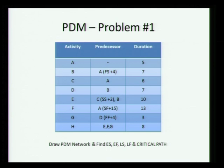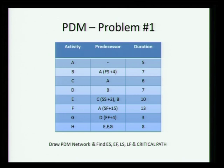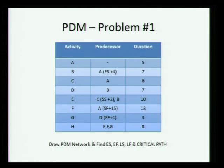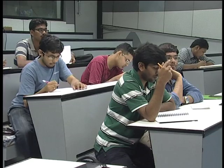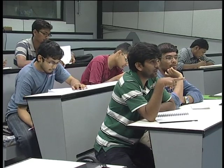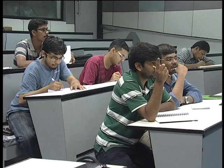A student asks: in the F-A relationship, is there a start-to-finish? Yes, start-to-finish means A start to F finish. F can finish 15 days after A starts — there is a 15-day lag. So in the A-F relationship, F finishes first; A will finish after F finishes. There is no direct finish relationship — F can finish only 15 days after A starts.